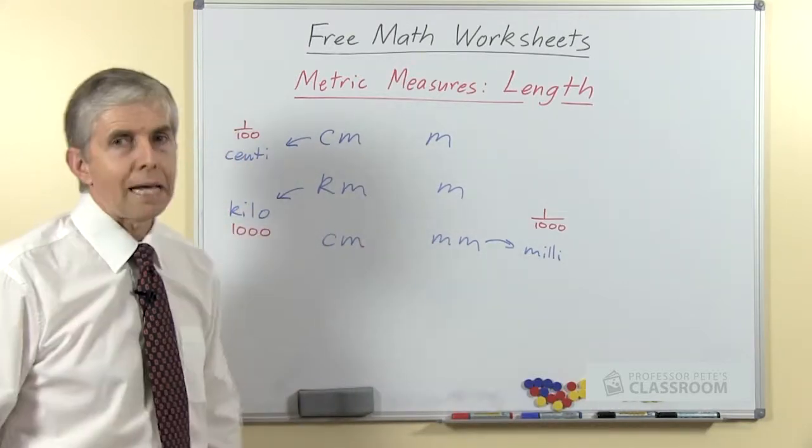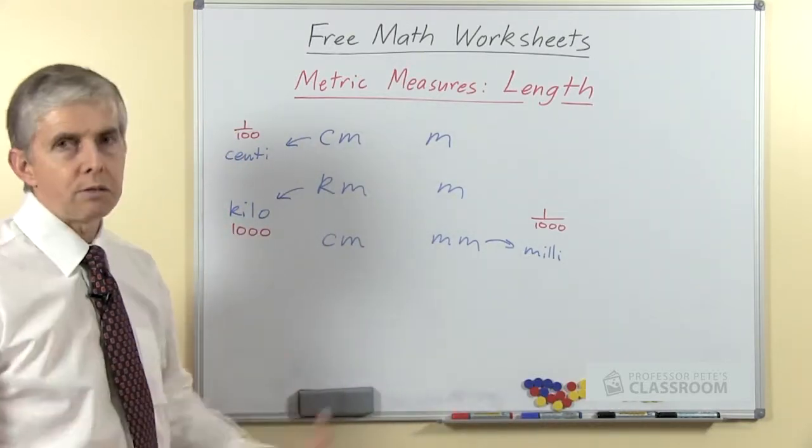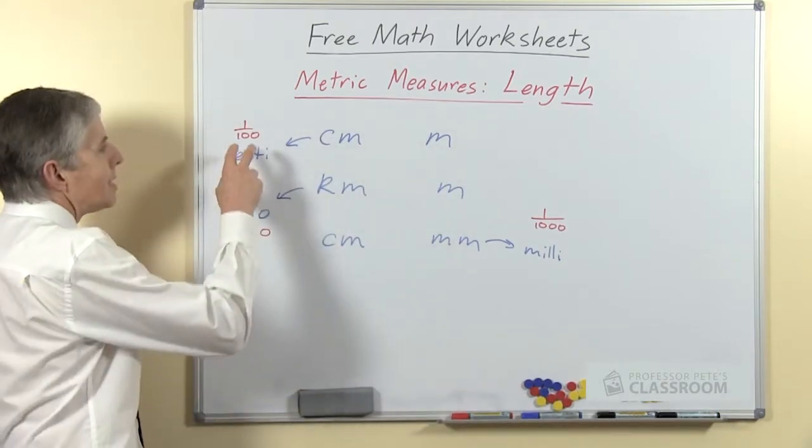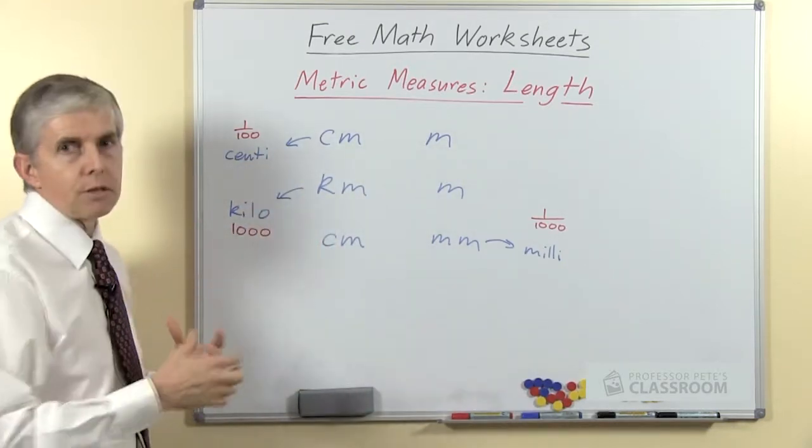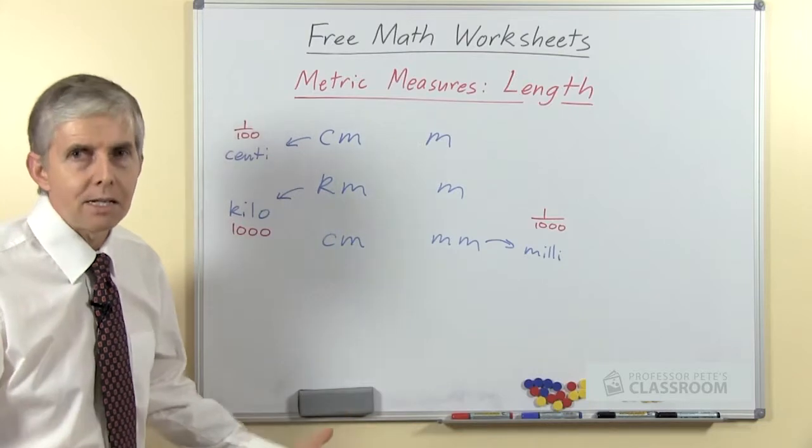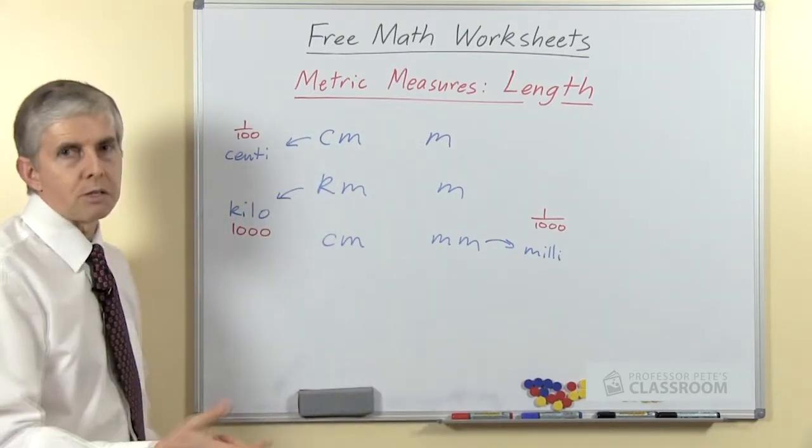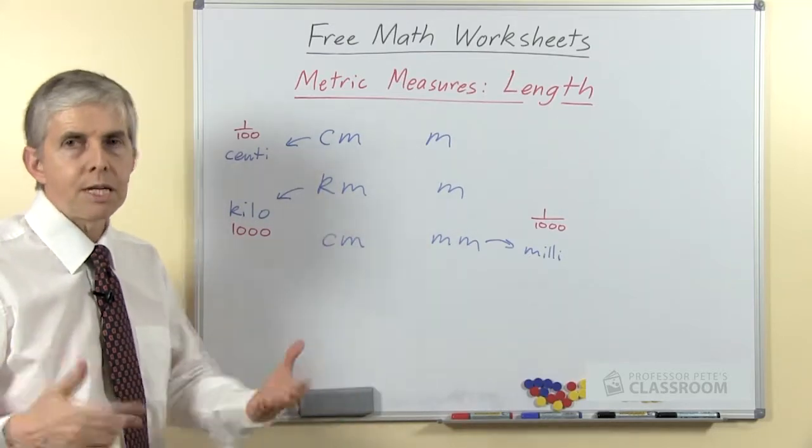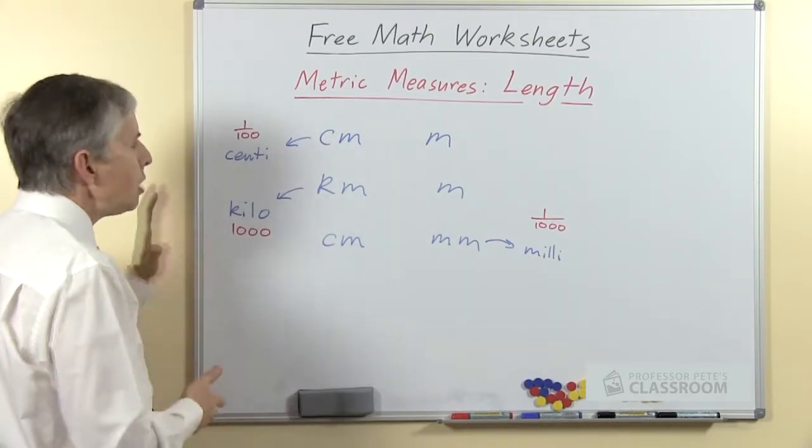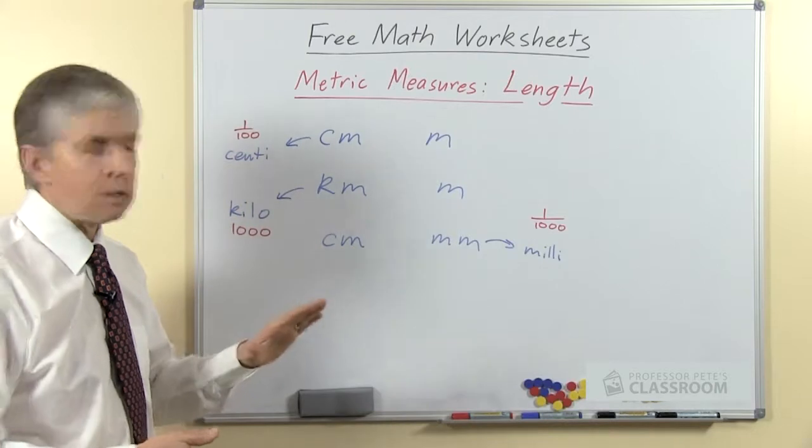In the metric system, because it was planned in advance, it's all based on 10. A centi anything is a hundredth of something, so a centiliter is a hundredth of a liter. A kilo of anything is a thousand, so a kilowatt is a thousand watts. We use those numbers when we're doing the conversion.